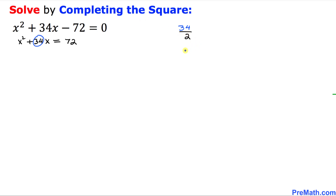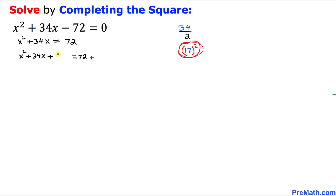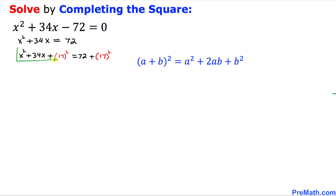We divide 34 by 2, which gives us 17, and then we square that number. We add 17 squared to both sides of the equation, giving us X squared plus 34X plus 17 squared on the left, and 72 plus 17 squared on the right.